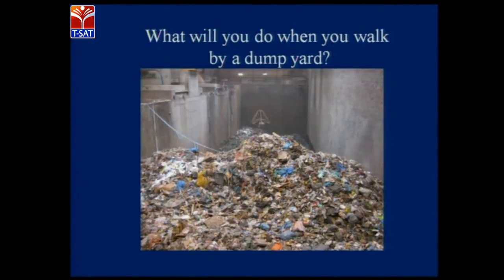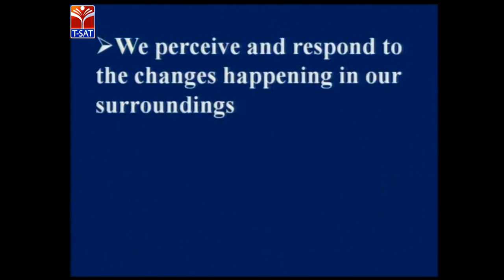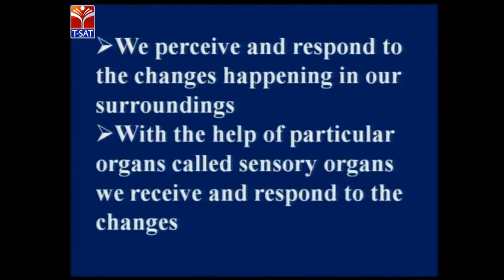So, these surroundings help us to receive all these changes. Now, look at this picture — what is this person doing? He is ironing clothes. Unexpectedly, if he touches that hot iron plate, what will he do? He will remove his hand immediately from that hot plate. How did he receive this change? This is because of the sense organs. We receive and respond to the changes happening in our surroundings. So, who are the organs here? These are the sensory organs. With the help of them, we receive and respond to changes.